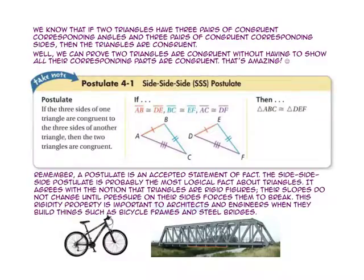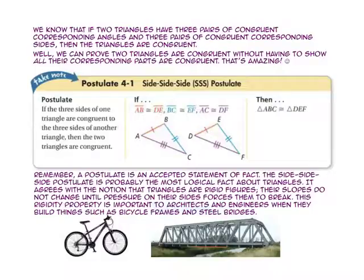We know that if two triangles have three pairs of congruent corresponding angles and three pairs of congruent corresponding sides, then the triangles are congruent. We can prove two triangles are congruent without having to show that all their corresponding parts are congruent. Let's take a look at the side-side-side postulate: if three sides of one triangle are congruent to three sides of another triangle, then the two triangles are congruent.